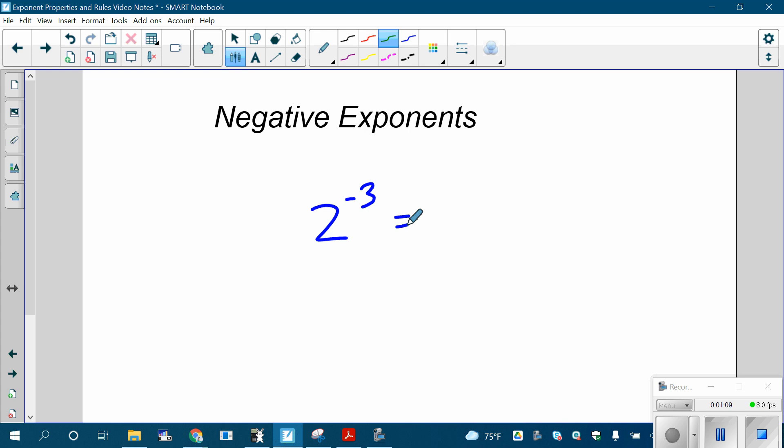In this case, 2 to the negative third, it's 1 divided by 2 to the positive third. So it flips to the bottom, but the exponent becomes positive so that you can then deal with it. What's 2 to the third? 2 times 2 times 2 is 8. So 2 to the negative third is 1/8.